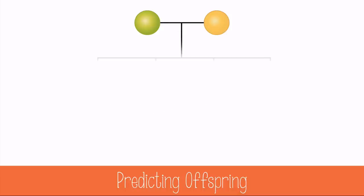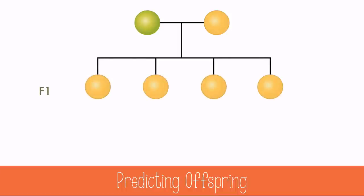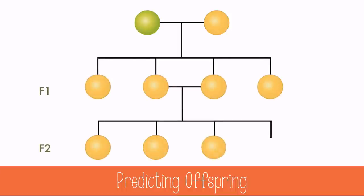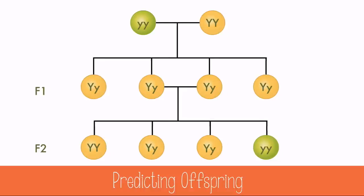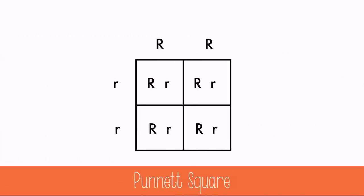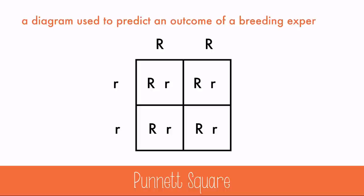While it's great to be able to run genetic experiments on peas or other organisms that breed quickly and in large numbers, there needs to be a better way to predict the offspring without having to actually breed them. That's where the Punnett Square comes in — it's a diagram used to predict the outcome of a breeding experiment.